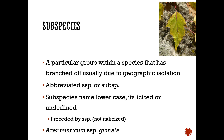Subspecies are a particular group within a species that have branched off, usually due to geographic isolation, abbreviated as SSP or SUBSP. Subspecies names are lowercase, italicized or underlined, and preceded by the abbreviation. For example, Acer tataricum subspecies ginnala, which is Amur maple.